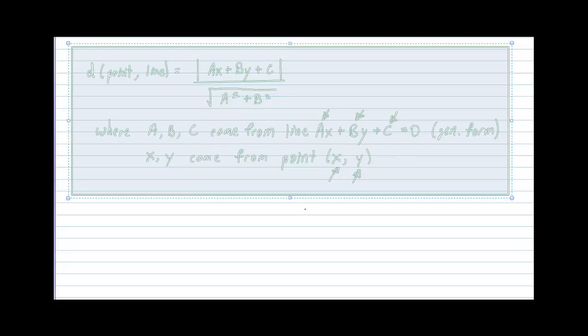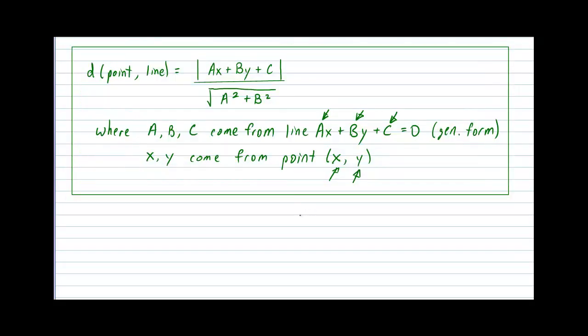So without further ado, let's take a look at the formula that will help calculate the distance between a point and a line. The distance from a point to a line is equal to the absolute value of Ax plus By plus C, all divided by the square root of A squared plus B squared.